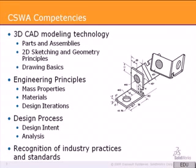What are the CSWA competencies? First, 3D CAD modeling technology — you need to know how to model parts and assemblies, 2D sketching and geometry principles, and drawing basics. There are engineering principles such as mass properties, materials, and design iteration. You need to understand the design process, design intent, and analysis, and recognition of industry standards.